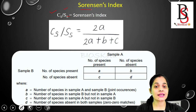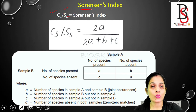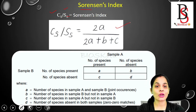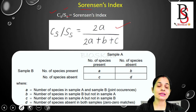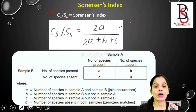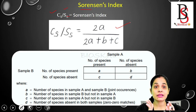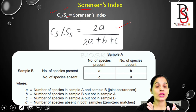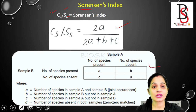The formula for Sorensen's index is 2a divided by (2a + b + c). This is a very simple formula. For calculating any type of similarity coefficient index, the first thing you have to do is to plot a 2×2 table.